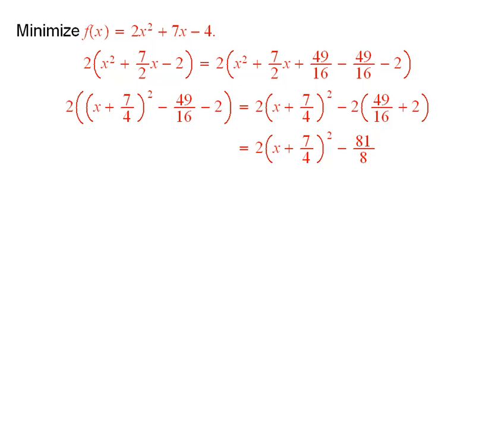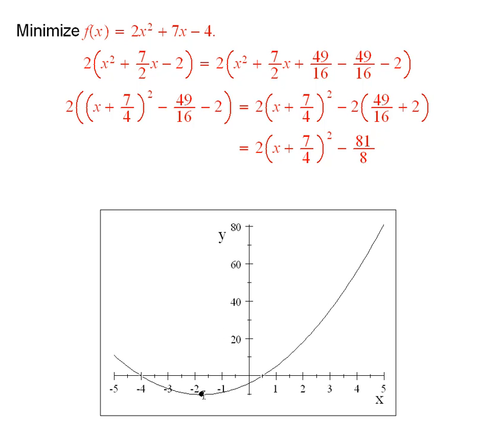Now here is the graph. You see, right down there at the bottom, at minus 7 fourths, which is a little to the right of negative 2, it achieves its minimum. And its minimum is minus 81 over 8, which is pretty close to minus 10, you see.